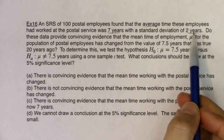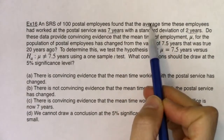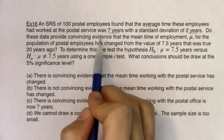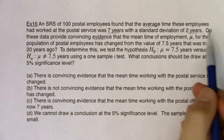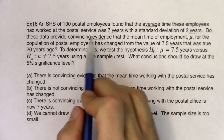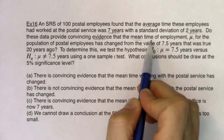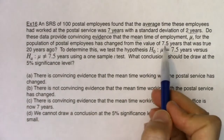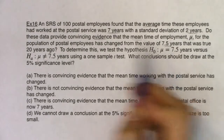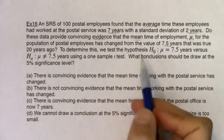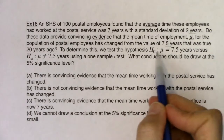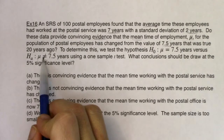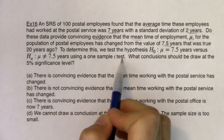Before I even read any more, I see average, so I know I'm going to be in mean land. Do these data provide convincing evidence that the mean time of employment, mu, for the population of postal employees has changed from the value of 7.5 years that was true 20 years ago? We'll test H-naught: mu equals 7.5 against the alternate that it's different from 7.5, using a one-sample t-test.